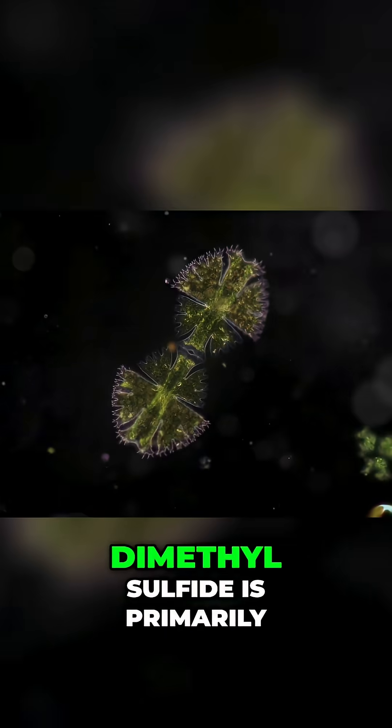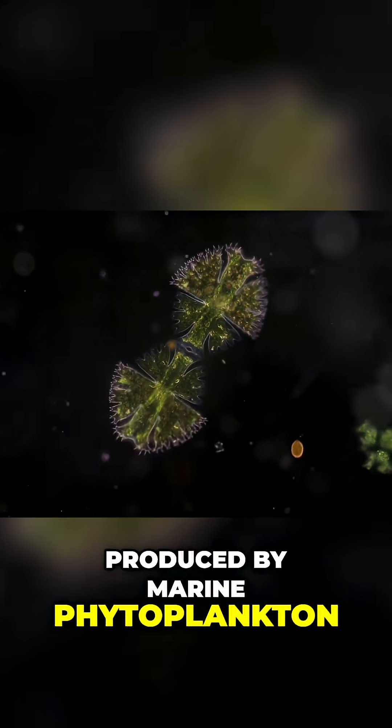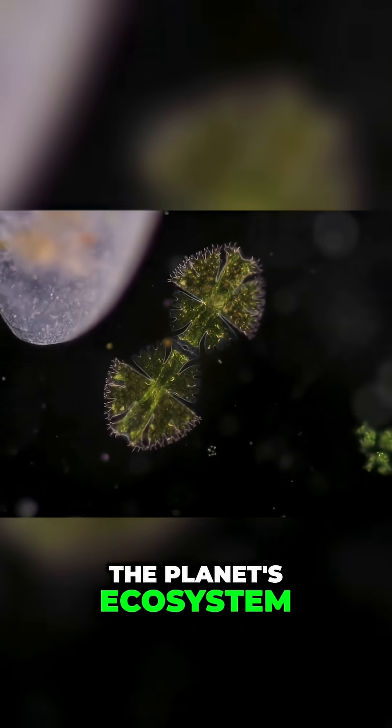On Earth, dimethyl sulfide is primarily produced by marine phytoplankton, tiny organisms that play a crucial role in the planet's ecosystem.